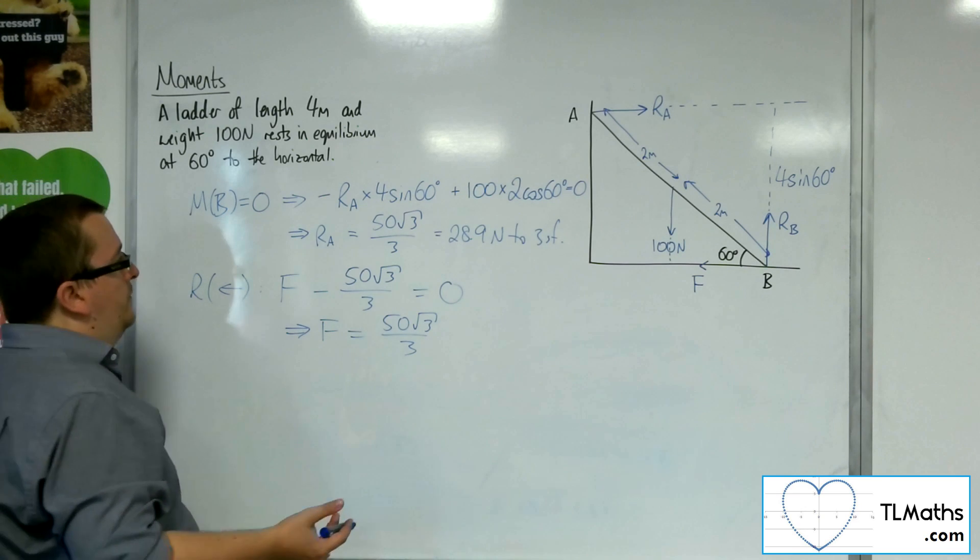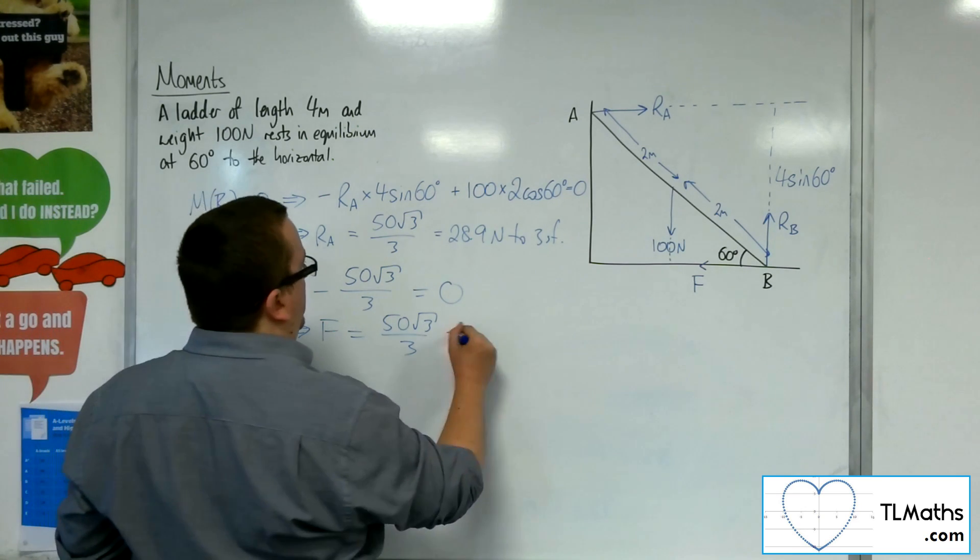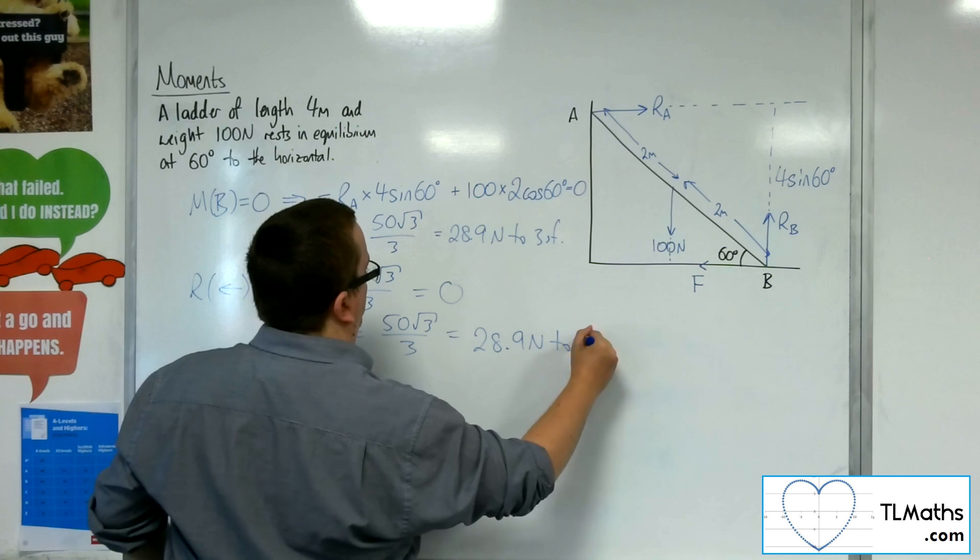So the frictional force is just 50 root 3 over 3, easy enough. So that's the frictional force. So that's the 28.9 newtons as well, to 3 sig fig.